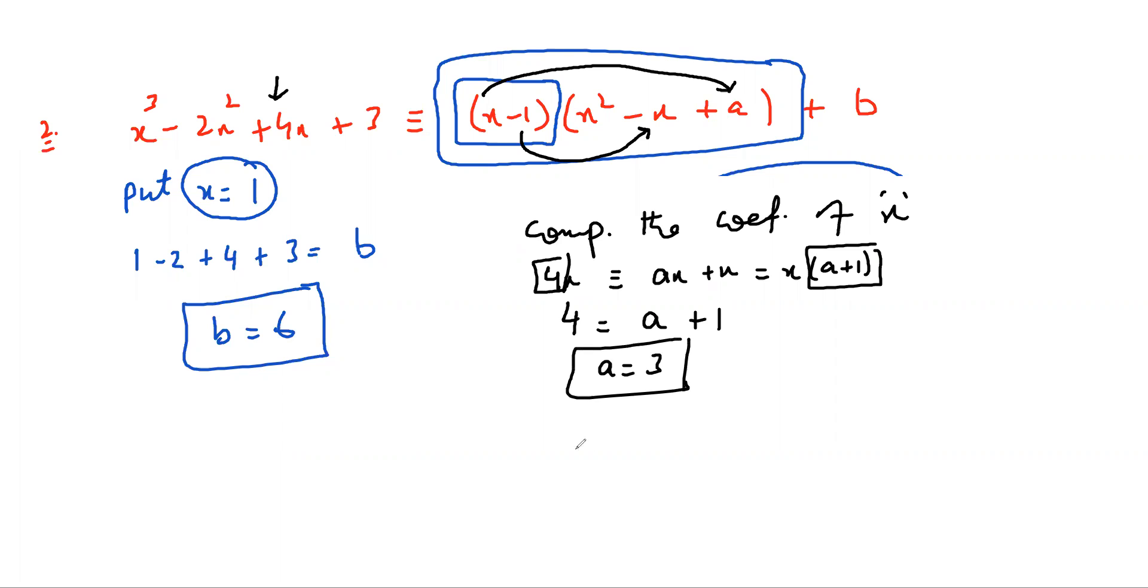You could even compare the coefficients. That could have been easier. You could compare the constants, in fact. Look at this. You have only this constant over here, which is 3. On this side, you have 3. And over here, you see this into this. That is going to give you a constant. That is minus A. And there is another constant over here, which is B. And you know that what is B? B is 6.